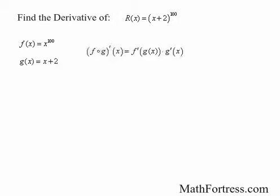In order to use the chain rule, we define the derivative of f of x, the outer function, and the derivative of g of x, the inner function. The derivative of f of x is equal to 100 times x to the power of 99, and the derivative of g of x is equal to 1.